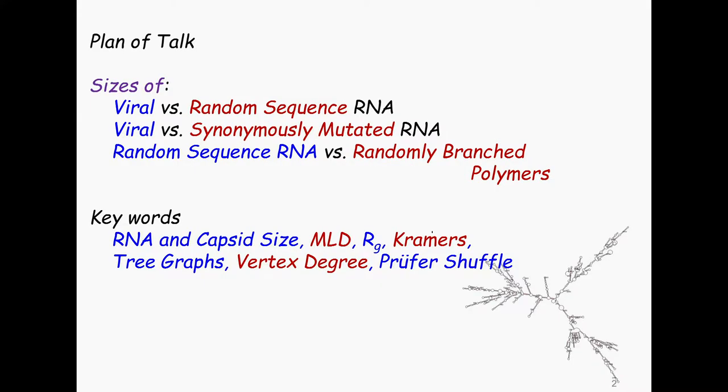The plan of the talk, I will try to finish on time. I will first compare viral RNA to random sequence RNA, this was one of the first exercises we checked years ago. Then I will mention in one or two slides the work of Luca Tubiana, who will talk later in more detail. Then I'll go from viral versus synonymously mutated RNAs. And then I will try to see whether random sequence RNA, which set an upper limit on viral RNA in the sense of radius of gyration, is similar or different from randomly branched polymers.